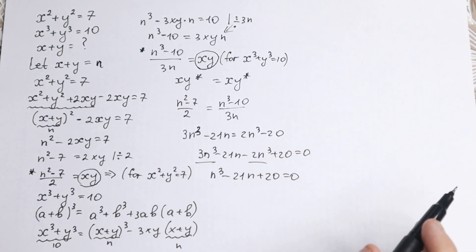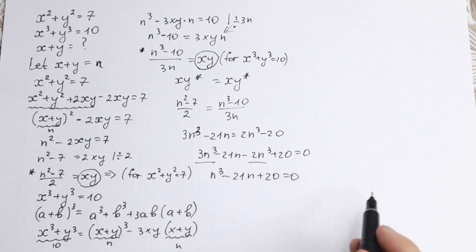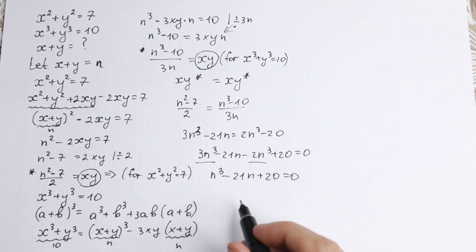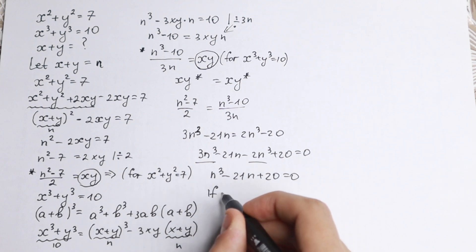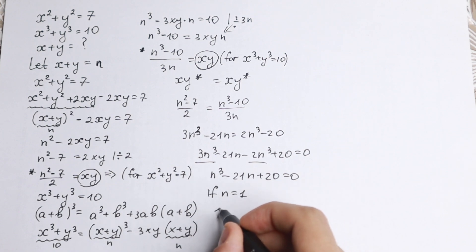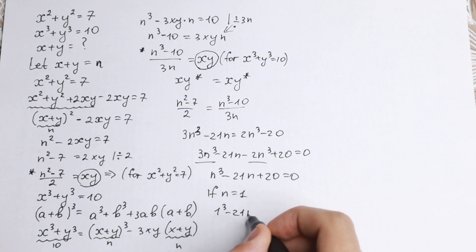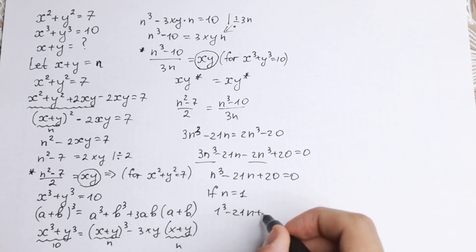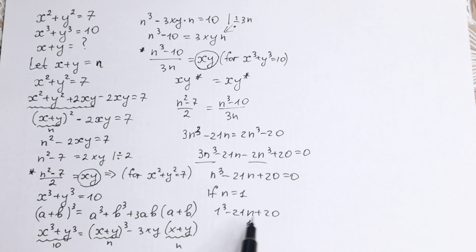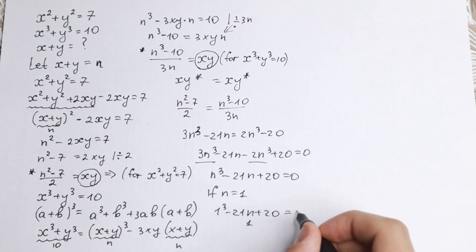This is a cubic equation, so we need to find a factor. I can see that if n equals 1, we get 1 minus 21 plus 20, which equals zero. So n equals 1 is a root, and we can divide by (n minus 1).